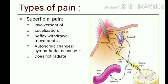Types of pain: superficial and deep pain. In superficial pain, there is involvement of pain receptors in the superficial layers like the skin and subcutaneous tissue. Here localization is proper and reflex withdrawal movement is possible — we can withdraw the affected area from the painful stimulus. Superficial pain is associated with autonomic changes like sympathetic responses: increase in heart rate, blood pressure, and respiratory rate. It usually does not radiate.